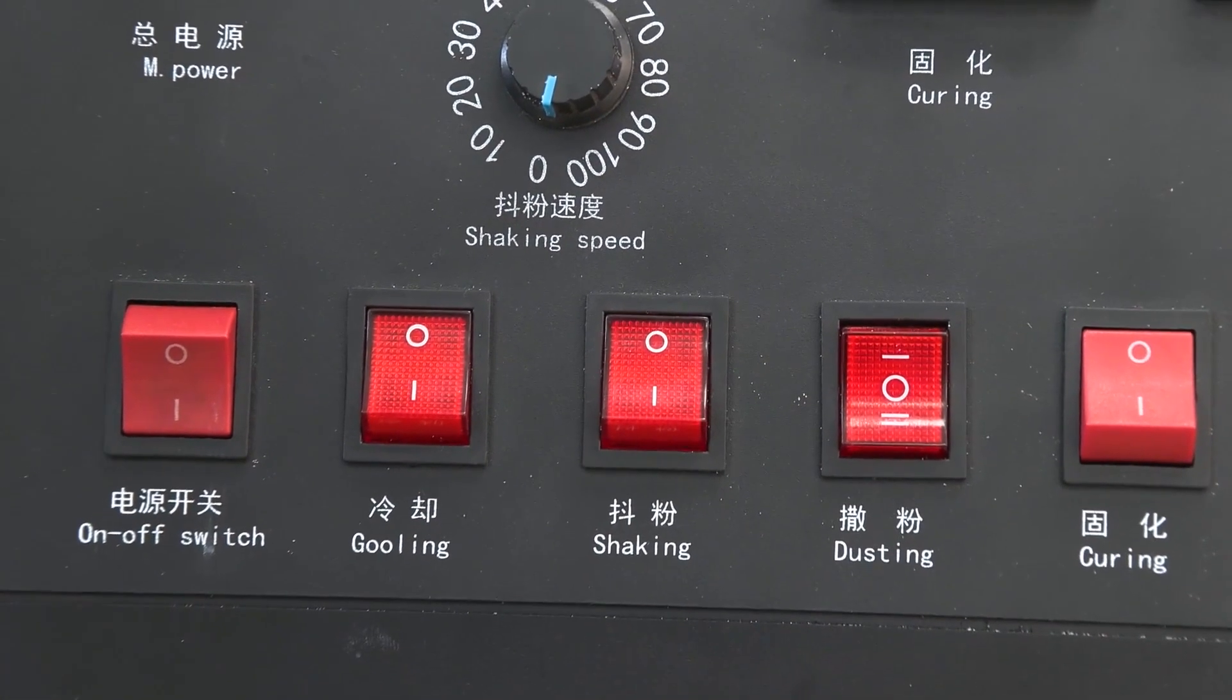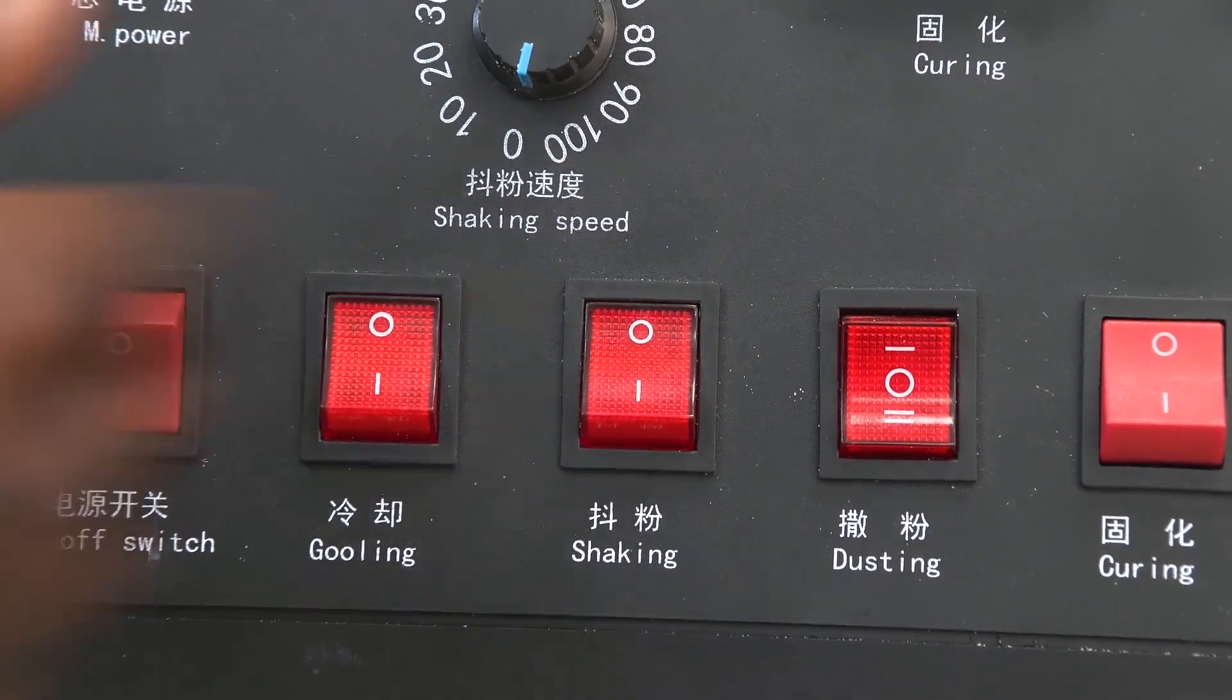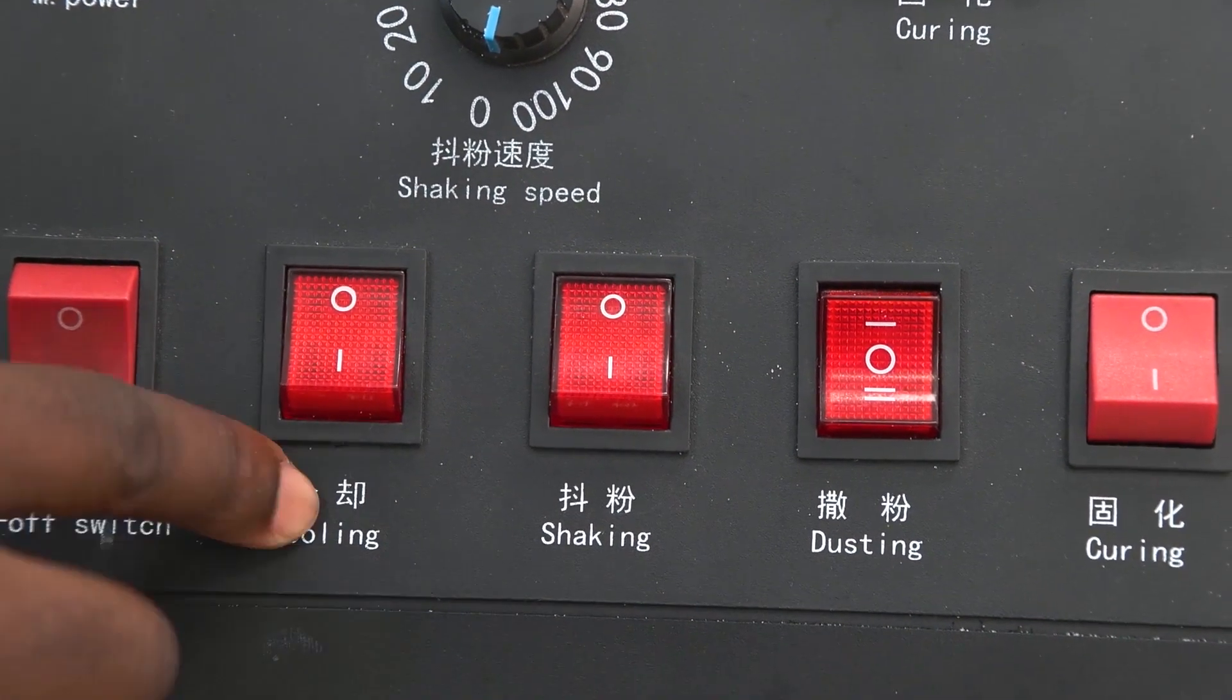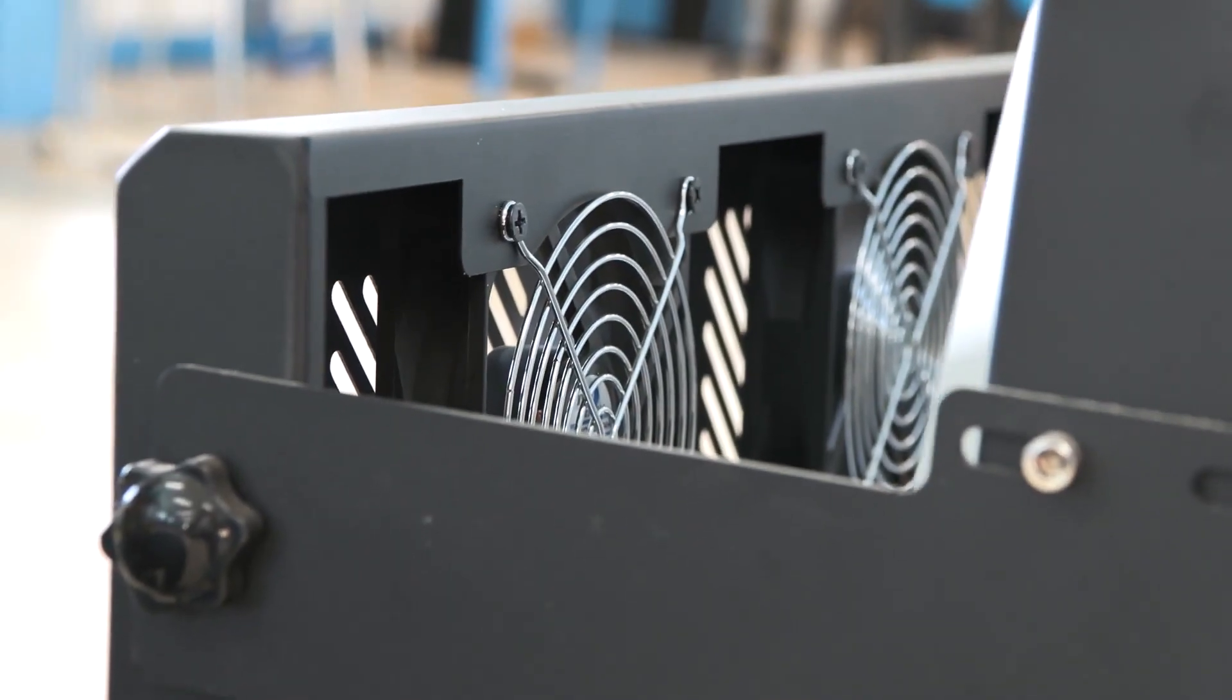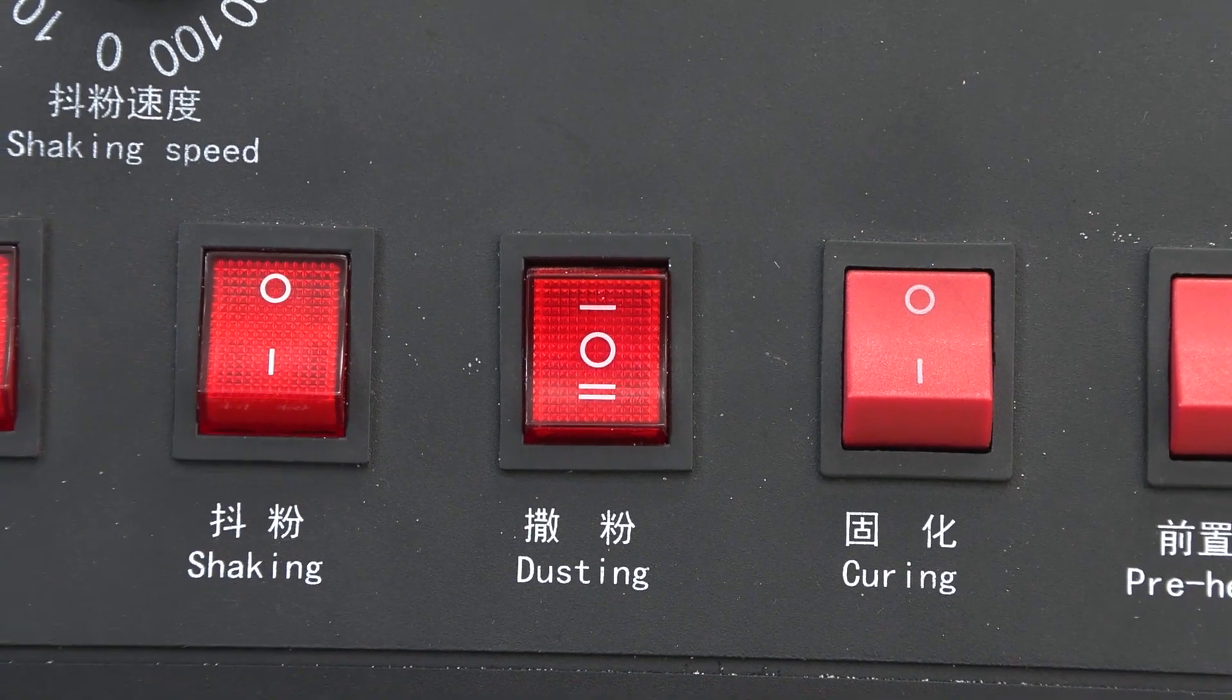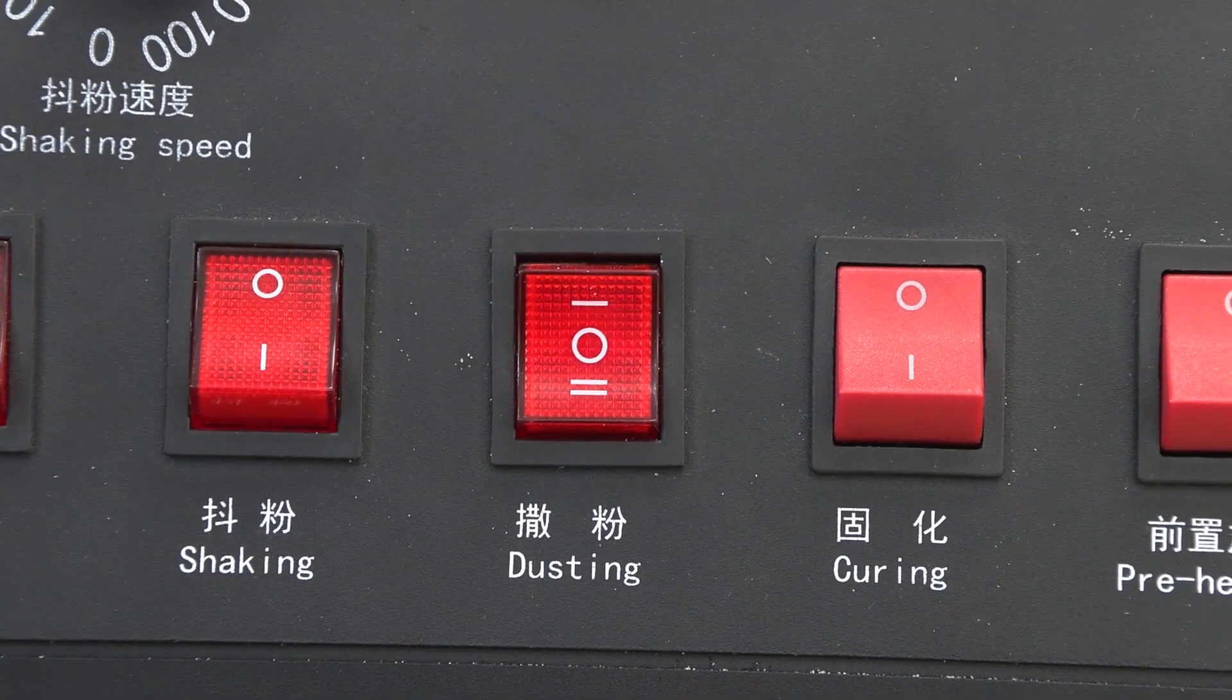Then what do we have here, the rest of the buttons? This is the cooling button, this is for your fans, and this is for the shaking which dusts the excess powder off your film.